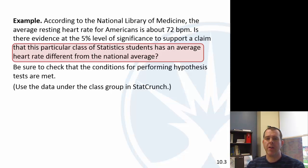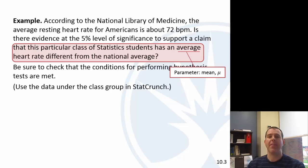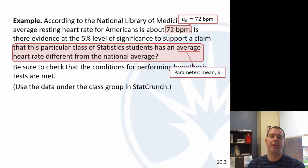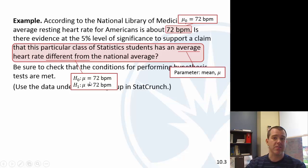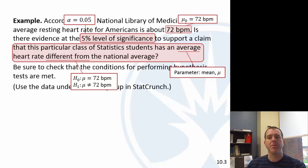The parameter here is going to be the mean. The null hypothesis is the status quo — we're assuming until proven otherwise that the mean of this class is also 72 beats per minute. For the alternative, this one said 'different from,' so we're not sure if it'll be greater or less, so we put not equal to. And we have the 5% level of significance, so alpha is .05.